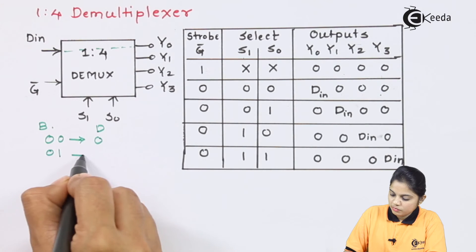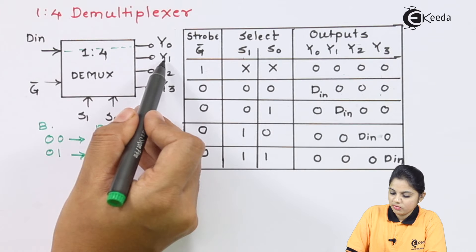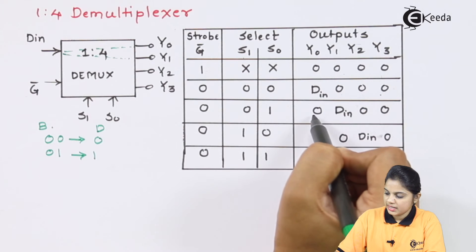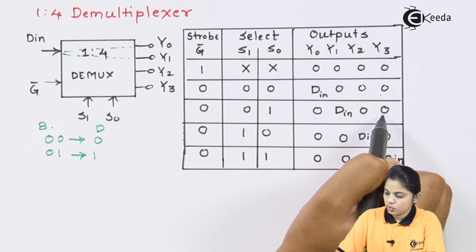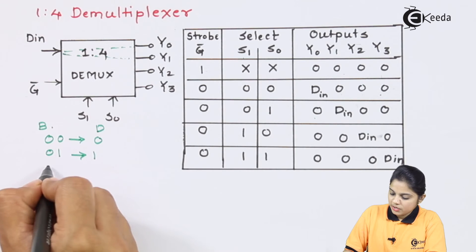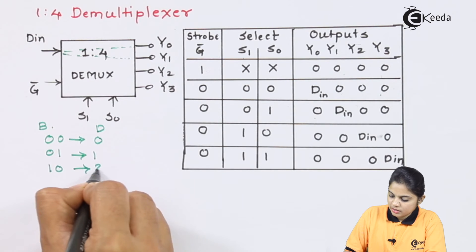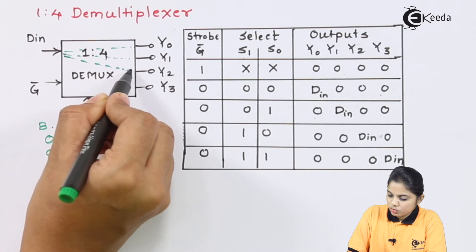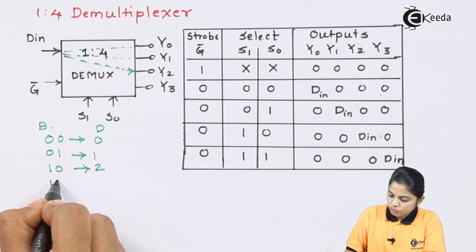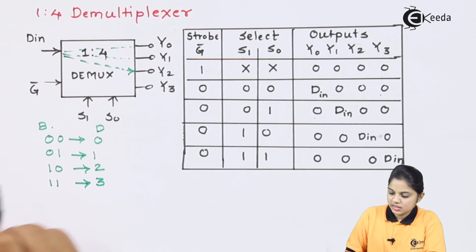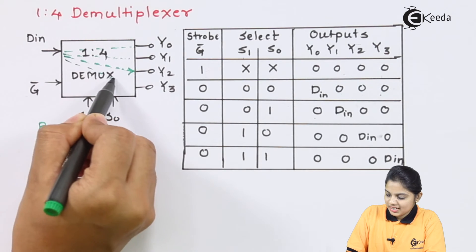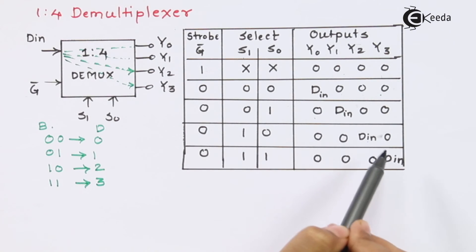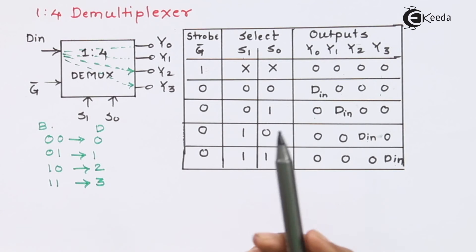If the select line is 1,0, which represents binary decimal 2, data is forwarded to output line Y2. Similarly, for select line 1,1, which represents decimal 3, the data is represented by output line Y3. Here you can see D-in is produced at that particular output line depending on the select line.